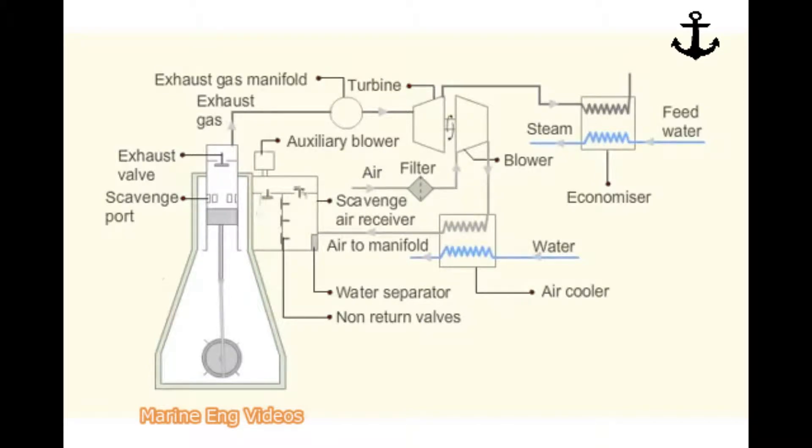The operation of the blower is automatic. The blower starts whenever the scavenge air pressure drops below a preset limit. It stops automatically when the pressure is sufficient. If the turbocharger breaks down, the auxiliary blower delivers sufficient air to run the engine at reduced power to reach the next port.